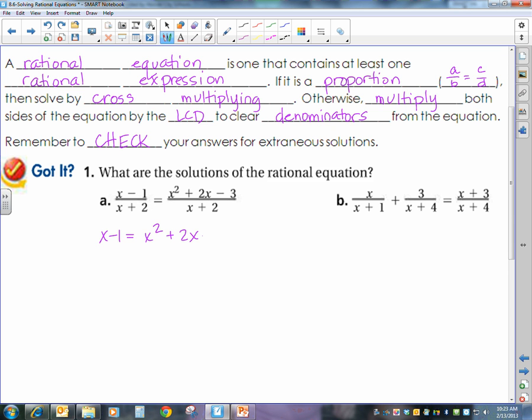x squared plus 2x minus 3. It's a quadratic equation because I have an exponent of 2, so that means I need to set everything equal to 0.